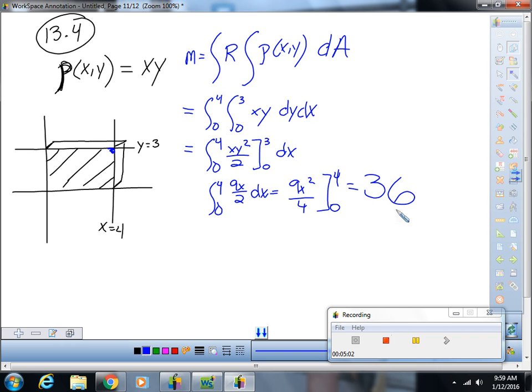And what did we find? What did we find there? 36 what? Units of mass. Units of mass. Okay.